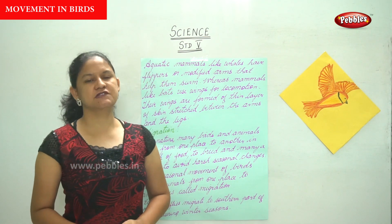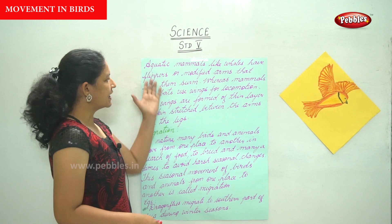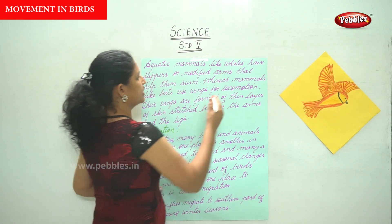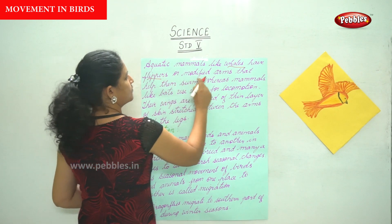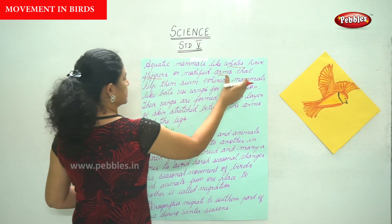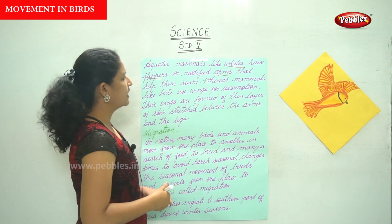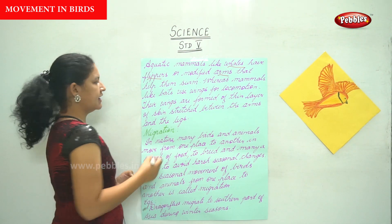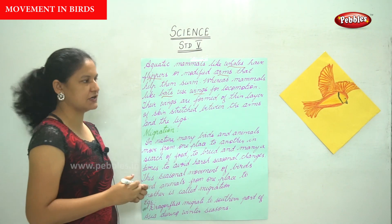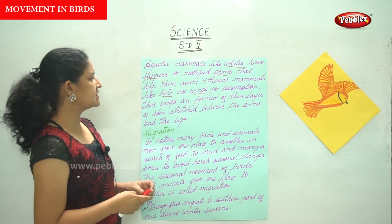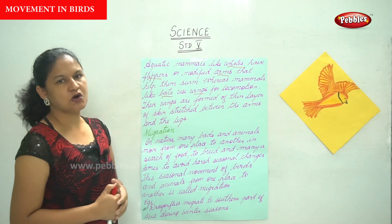Aquatic mammals like whales have flippers or modified arms that help them swim, whereas mammals like bats use wings for locomotion. Their wings are formed of a thin layer of skin.